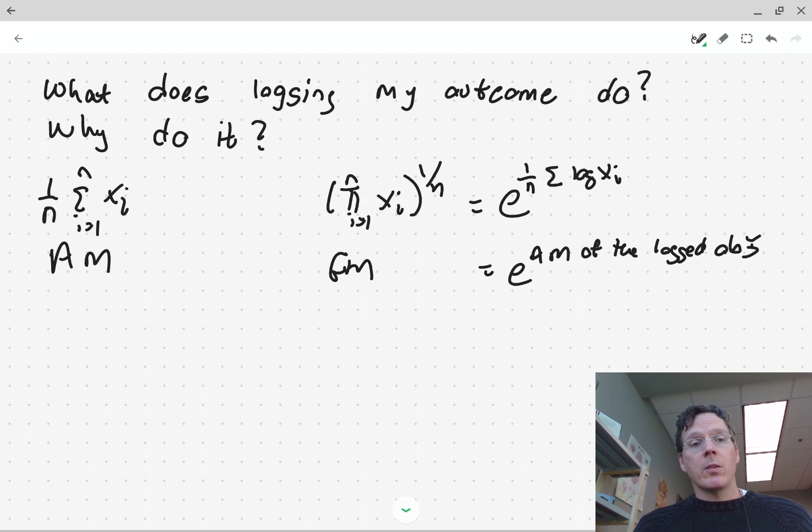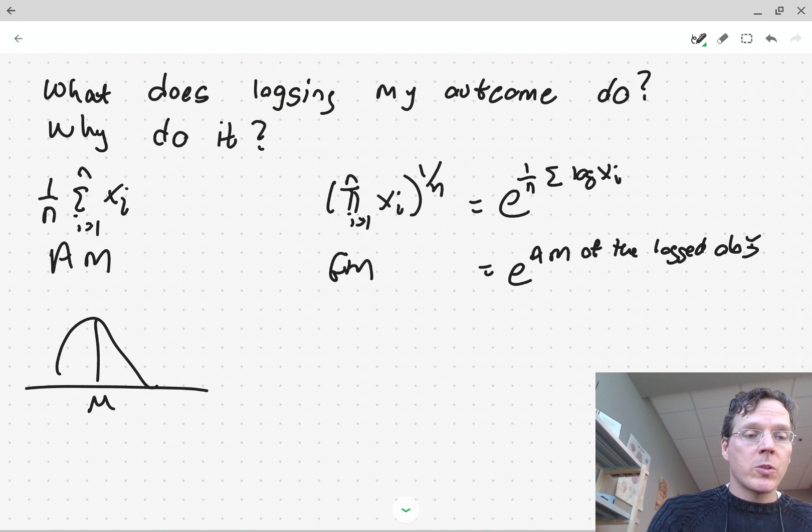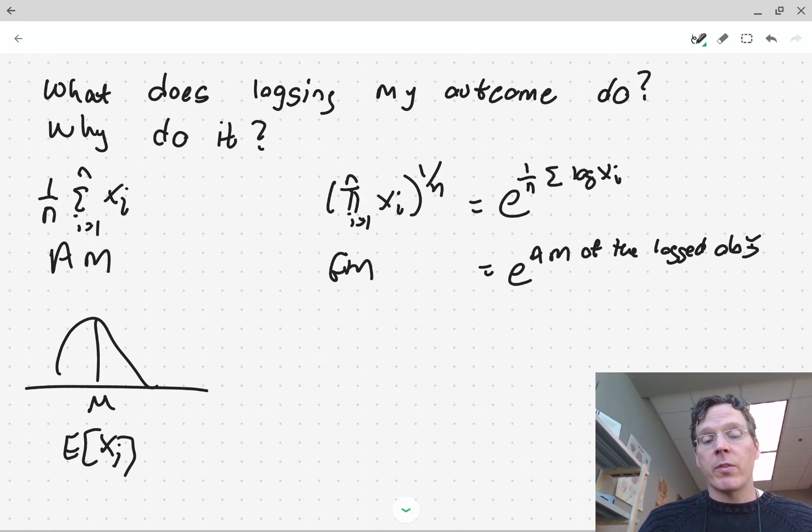Now, what do these things estimate? So the arithmetic mean, if you have some distribution, it estimates the mean mu of the distribution, which is the center of mass of that distribution. Let's call it E[Xi], the average value, the population averaged value of that population for those kinds of observations.